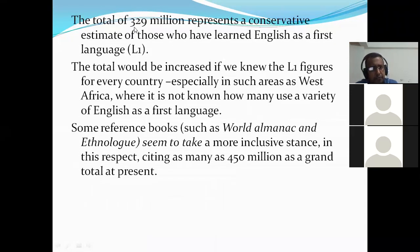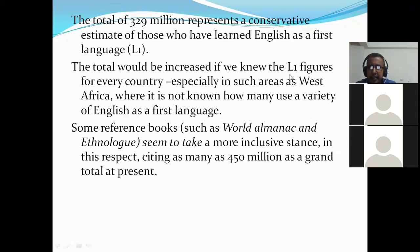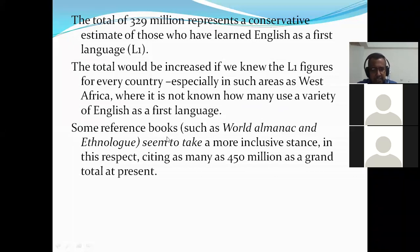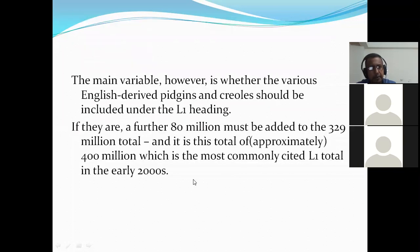The total of 329 million represents a conservative estimate of those who have learnt English as the first language. The total would be increased if we knew the first language figures for every country, especially in areas such as West Africa where it is not known how many use a variety of English. Some reference books cite as many as 450 million as a grand total for first language speakers.